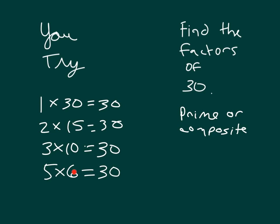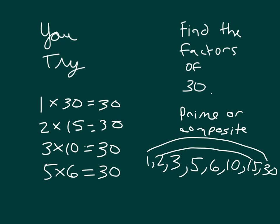These are your factors of 30. List them in order: 1, 2, 3, 5, 6, 10, 15, and 30. Notice they correspond to each other. 2 times 15, 3 times 10, 5 times 6.